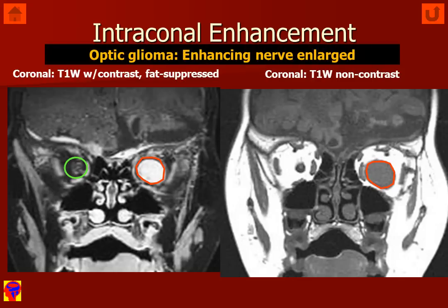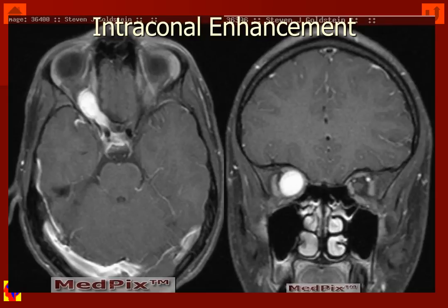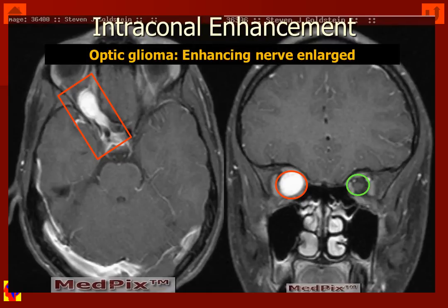This is most consistent with an optic nerve glioma. A third example of optic nerve glioma shows us in the red rectangle an abnormally enlarged optic nerve with abnormal enhancement on the right side, and the coronal image demonstrates the intraconal enhancing mass lesion. The normal optic nerve in the green circle does not show contrast enhancement.